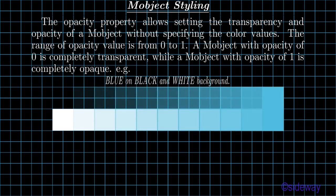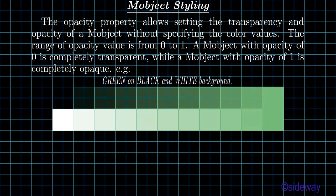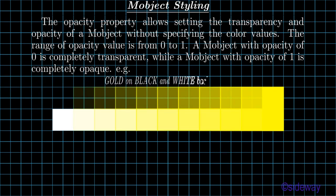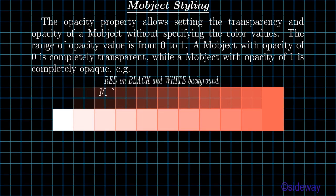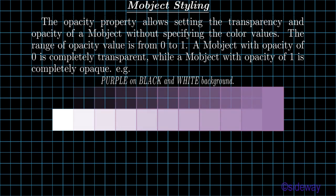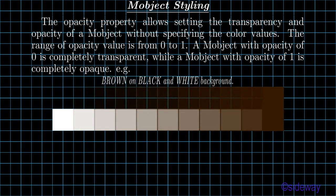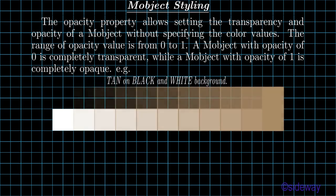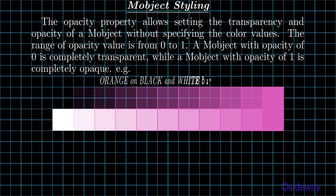Blue on black and white background. Teal on black and white background. Green on black and white background. Yellow on black and white background. Gold on black and white background. Red on black and white background. Maroon on black and white background. Purple on black and white background. Gray on black and white background. Brown on black and white background. Tan on black and white background. Pink on black and white background. Orange on black and white background. Violet on black and white background.